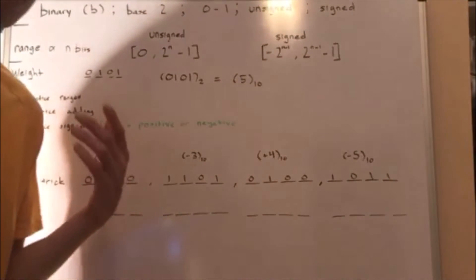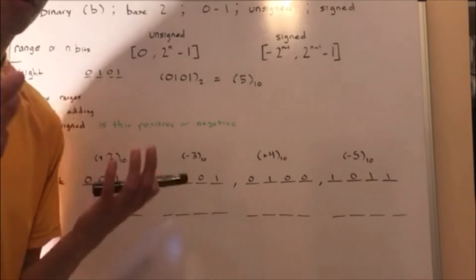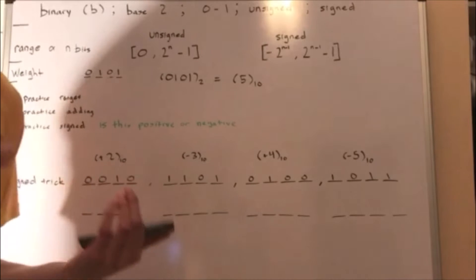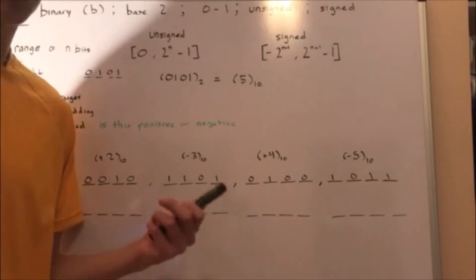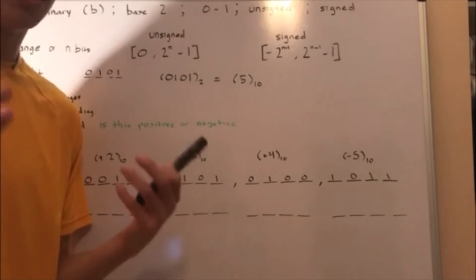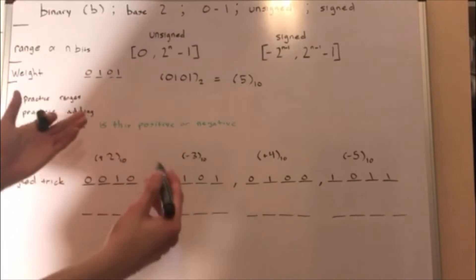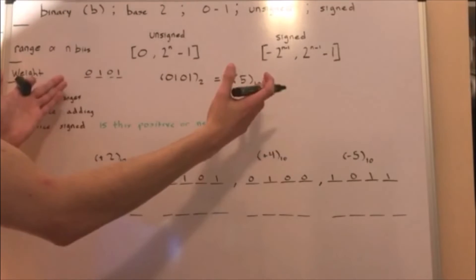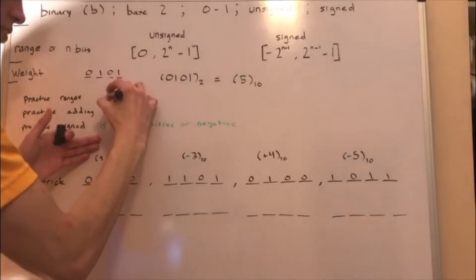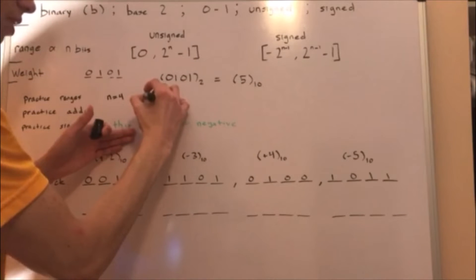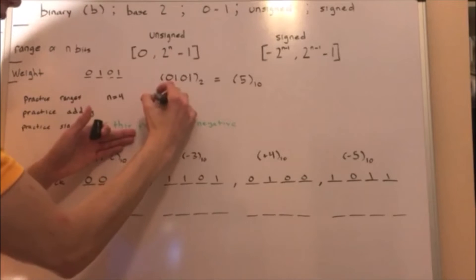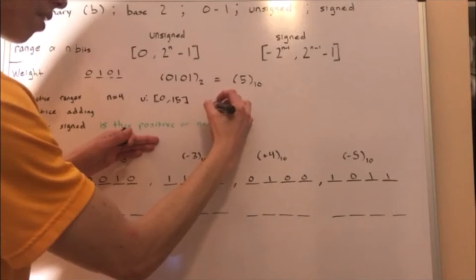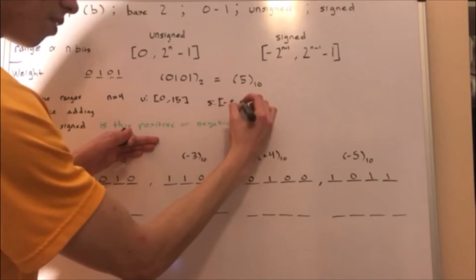Continuing with practice ranges: your professor will always say use a 4-bit unsigned number or a 4-bit signed number, and your textbook will do the same — for example, use a 6-bit unsigned or 6-bit signed number. You're always told if it's unsigned or signed. For n equals 4 bits, if it's unsigned the range is 0 to 15, and if it's signed the range is negative 8 to 7.